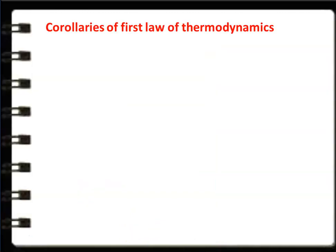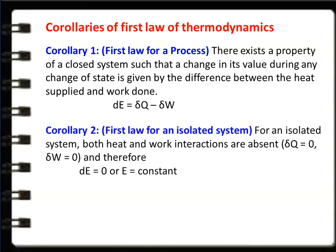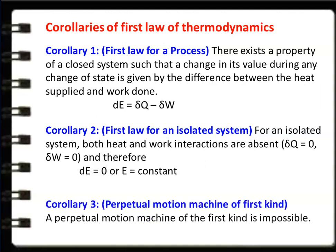Corollary 1 — application of the First Law to a process: there exists a property of a closed system such that the change in its value during any change of state is given by the difference between heat supplied and work done: ΔE = δQ + δW. Corollary 2 — for an isolated system, both heat and work interactions are absent: δQ = 0, δW = 0, therefore ΔE = 0, meaning energy is constant. Corollary 3: a perpetual motion machine of the first kind is impossible.